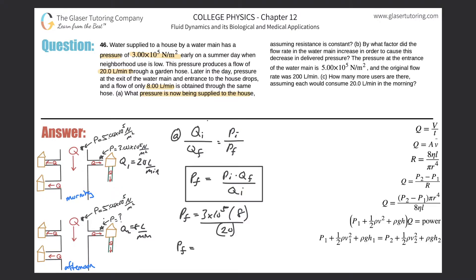The final pressure is: 3 times 10 to the 5 times 8 divided by 20, giving a value of 1.20 times 10 to the 5 newtons per meter squared, or pascals. That's the answer for Part A.